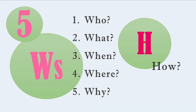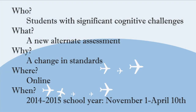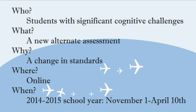The hope is that as we go through today, we'll answer the five W's and our how. So just to start out: who is this for? It's our students with significant cognitive challenges — essentially the same group of students who took the WASP portfolio. What is it? It's a new alternate assessment. Why? We changed our standards — we moved from state-based standards to Common Core standards. Where? Online is where this will sit. And when? This school year, November 1 through April 10 is our administration window.